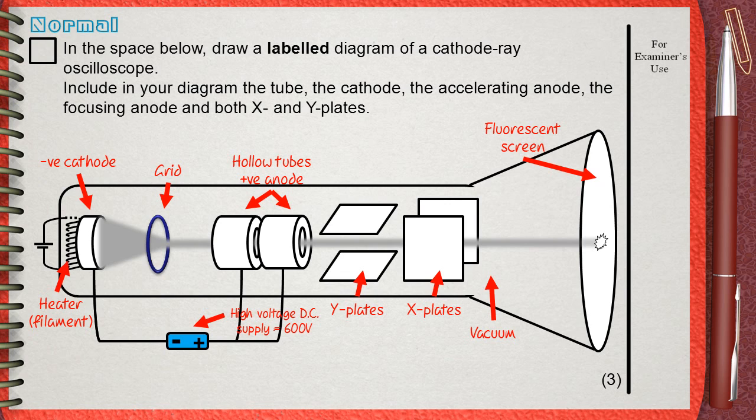Starting from the heater filament until the anode, this part is named the electron gun. The Y plates and the X plates, these are the deflection system. And finally, the third part of the oscilloscope is the fluorescent screen.